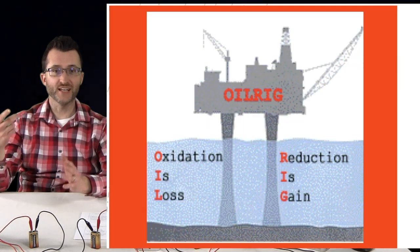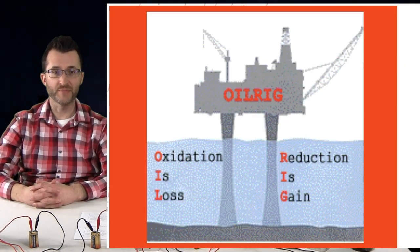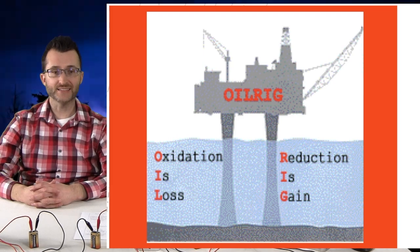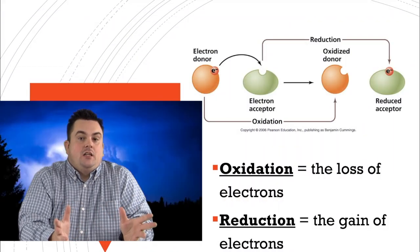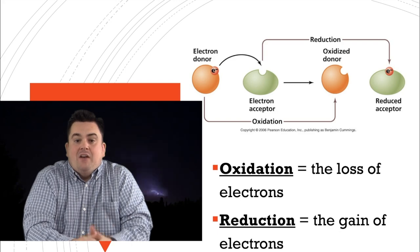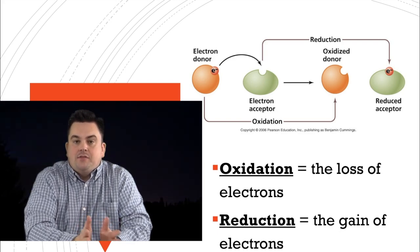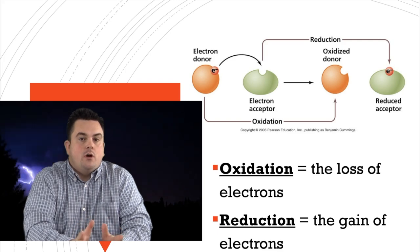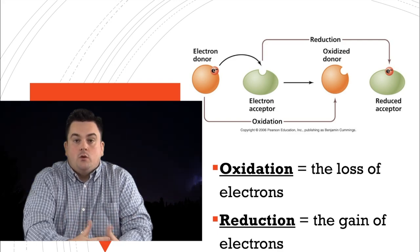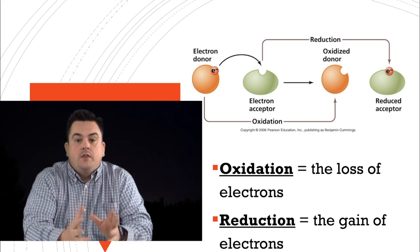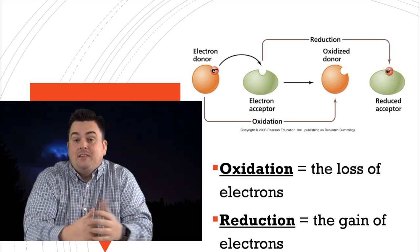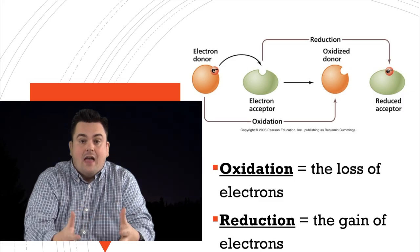Oxidation is the loss of electrons; reduction is the gain of electrons. A helpful mnemonic device is OIL RIG: Oxidation Is Losing electrons, Reduction Is Gaining electrons. Looking at the diagram, we have an electron donor and an electron acceptor. On the left side of the arrow, the electron donor is giving away — or losing — that electron; that is oxidation. The electron acceptor is gaining the electron; that is reduction.